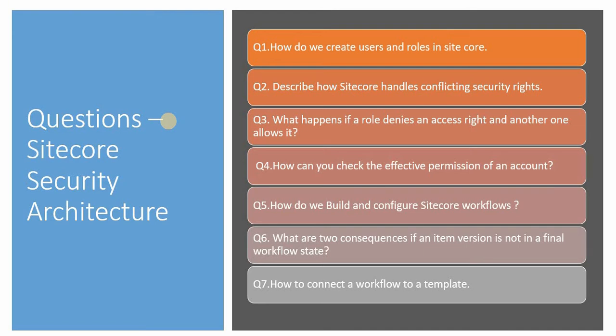You should know that. The fourth question is: how can you check the effective permission of an account? You know the username — how do you check what the effective permission that account is getting? You should know the process. The fifth question is: how do you build and configure a Sitecore workflow?